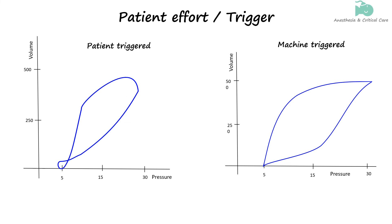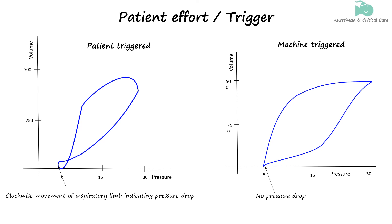Normally, the pressure-volume loop traces in a counterclockwise direction. A slight indentation or inflection at the very start of the inspiratory limb indicates the patient's effort to initiate the breath, causing a brief drop in pressure before the ventilator takes over. If the ventilator is time or machine triggered, the inspiratory limb begins smoothly without any initial dip or indentation.